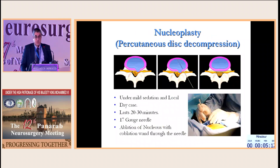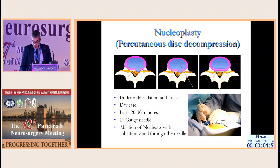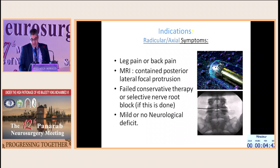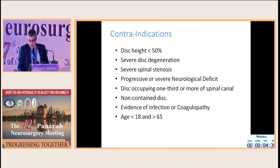Percutaneous disc decompression with nucleoplasty is done under mild sedation and local anesthesia in only 20 to 30 minutes, with ablation of the nucleus via coblation through the needle. It is indicated only in radicular pain with axial symptoms when the MRI shows posterior lateral focal protrusion after failure of conservative treatment. If disc height is less than 50%, or there is severe degeneration or severe spinal stenosis, it is contraindicated.